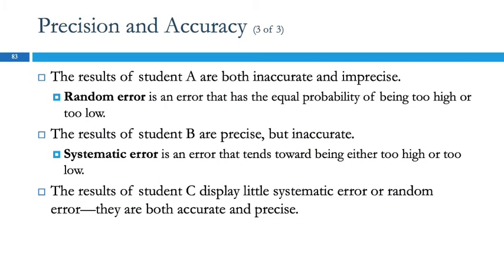There are two kinds of error. Random error has an equal chance of being high or low. So it's random. Any given measurement might be higher than it should be or lower than it should be. You can't avoid a certain amount of random error.